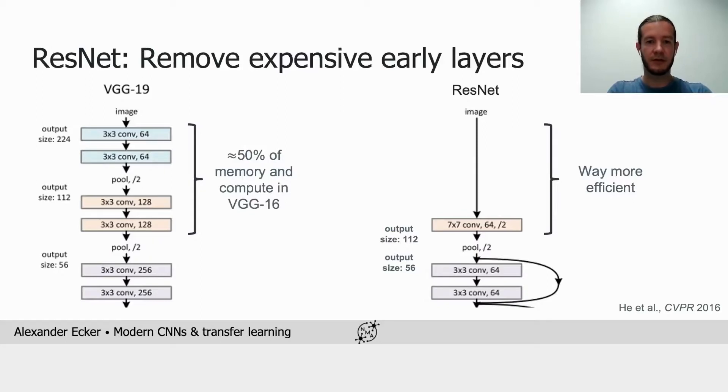For the first couple of layers, consider VGG shown on the left. It turns out that about 50% of the compute in the entire network ends up happening in the first four layers. And the remaining 15 layers that followed them require around the same compute budget. And that's because these early layers, they operate at high resolution.